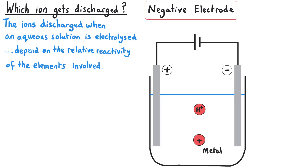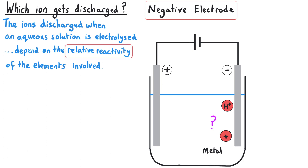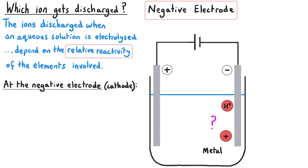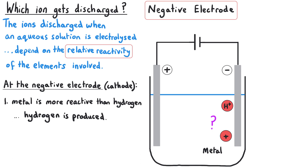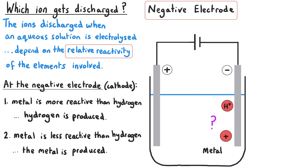In theory, both positive ions will be attracted to the negative electrode during electrolysis, but only one will get discharged — that means lose its charge — while the other stays in solution. In general, the ions discharged when an aqueous solution is electrolysed depend on the relative reactivity of the elements involved. At the negative electrode, the cathode, we are deciding between a metal ion and the hydrogen ion from the water. If the metal is more reactive than hydrogen, the hydrogen ion will be discharged and hydrogen is produced. If the metal is less reactive than hydrogen, the metal will be produced.